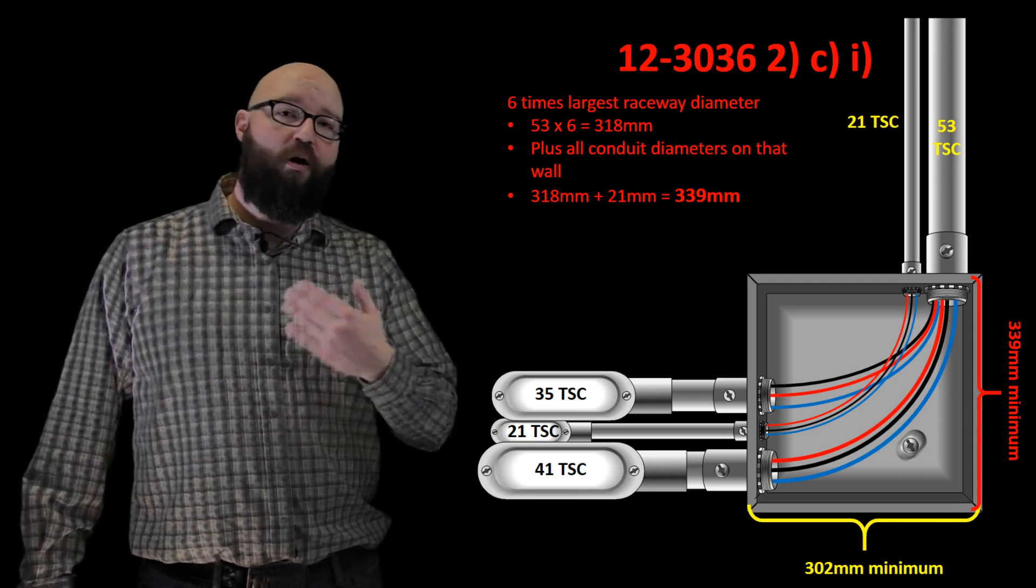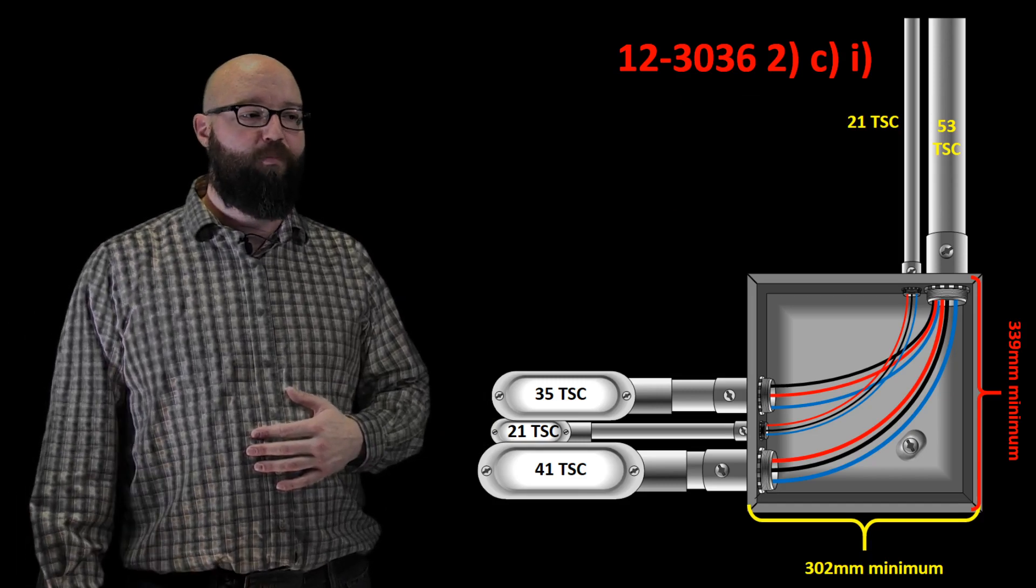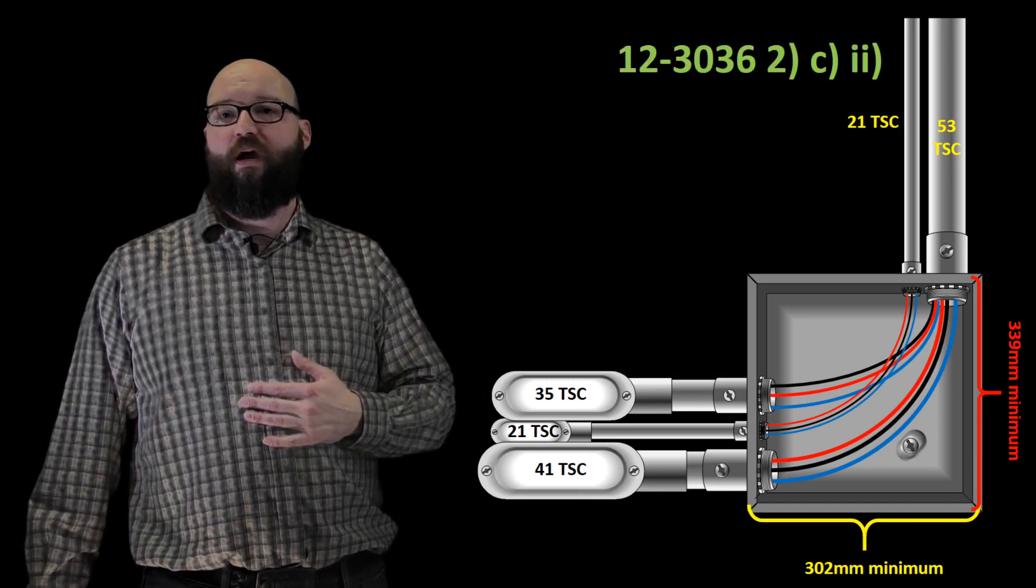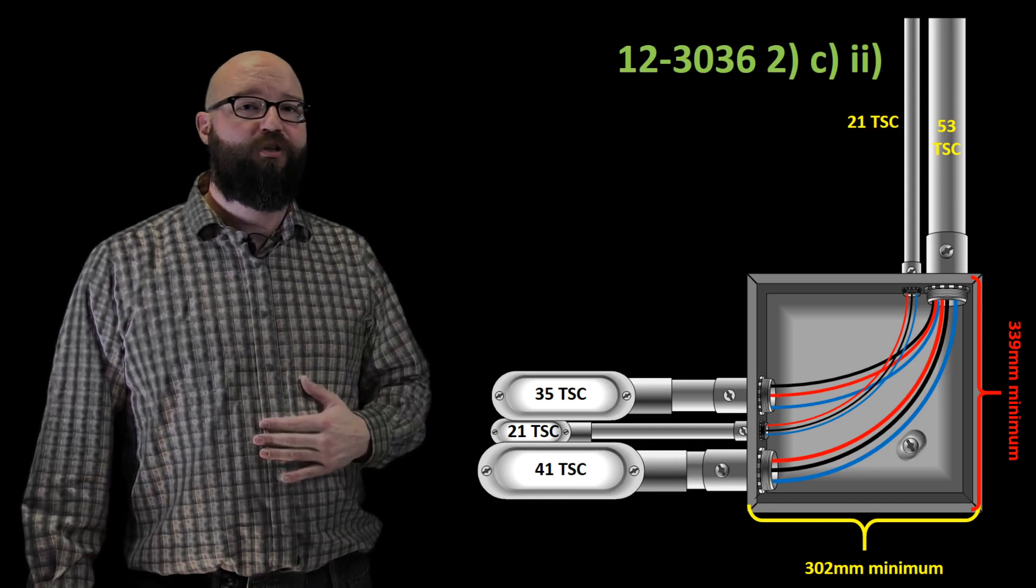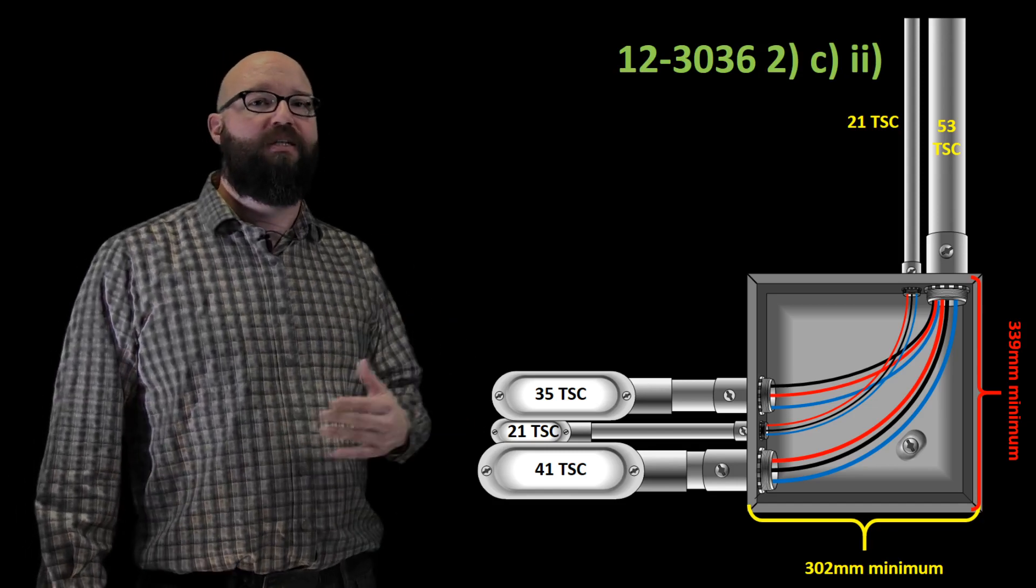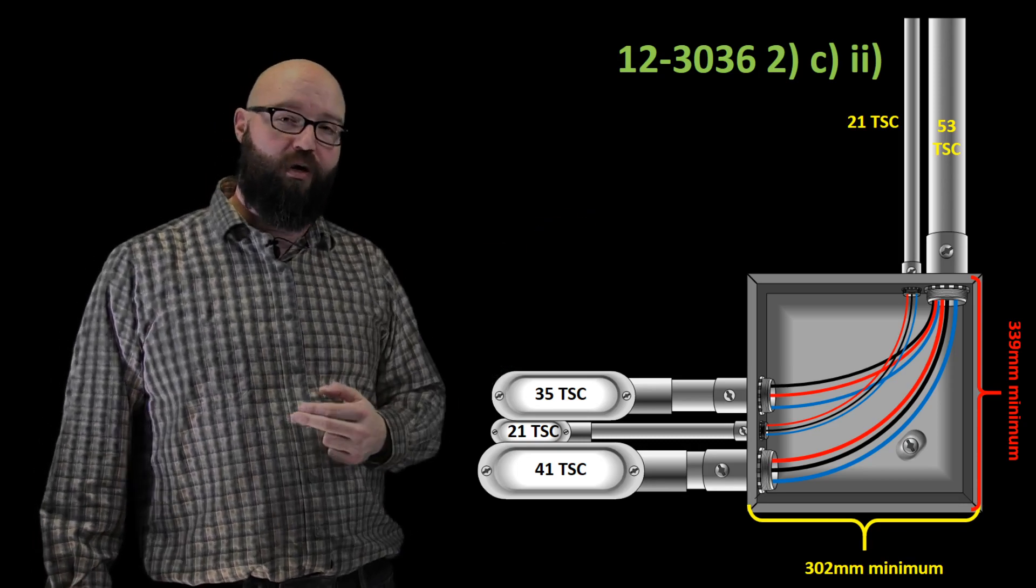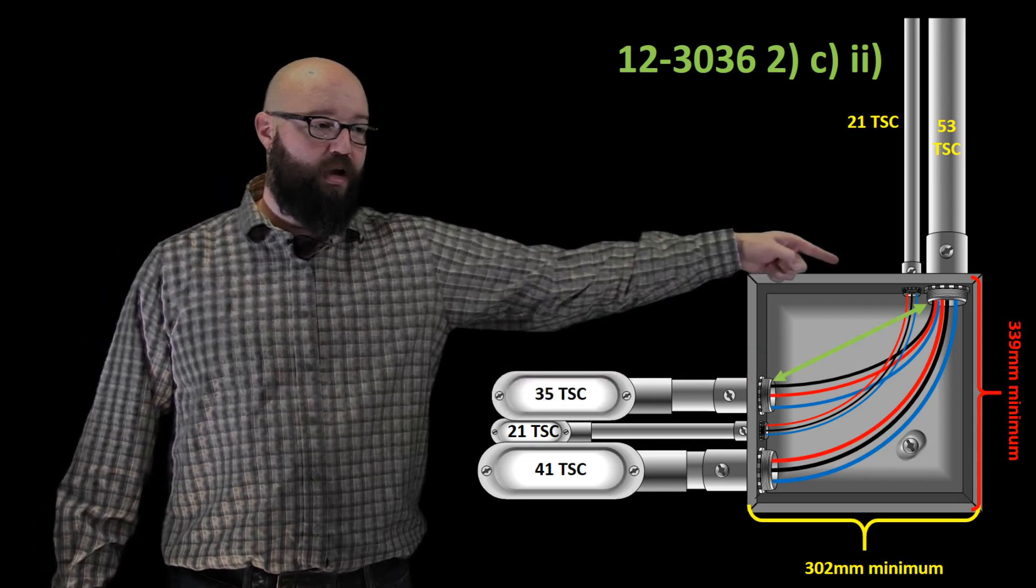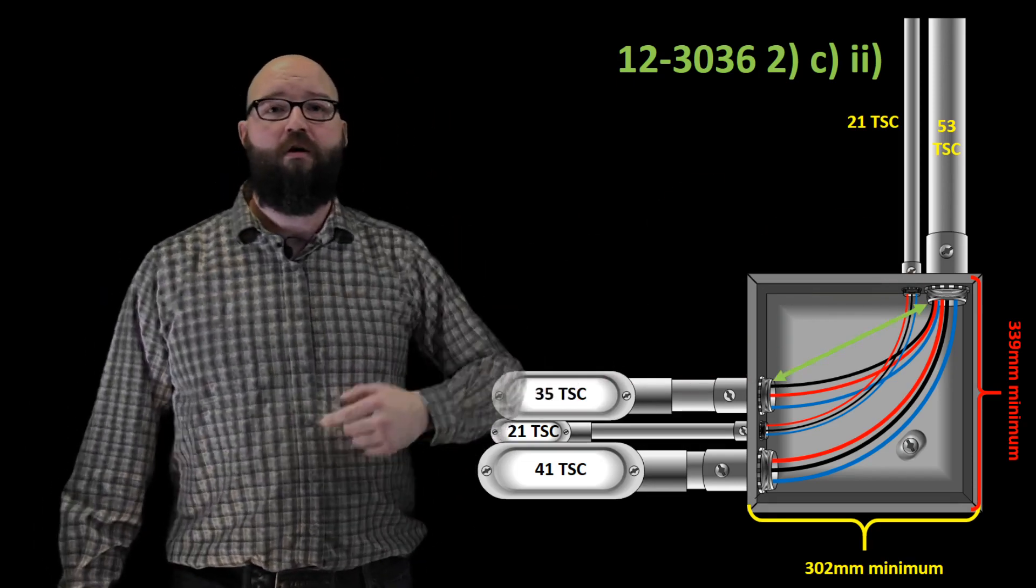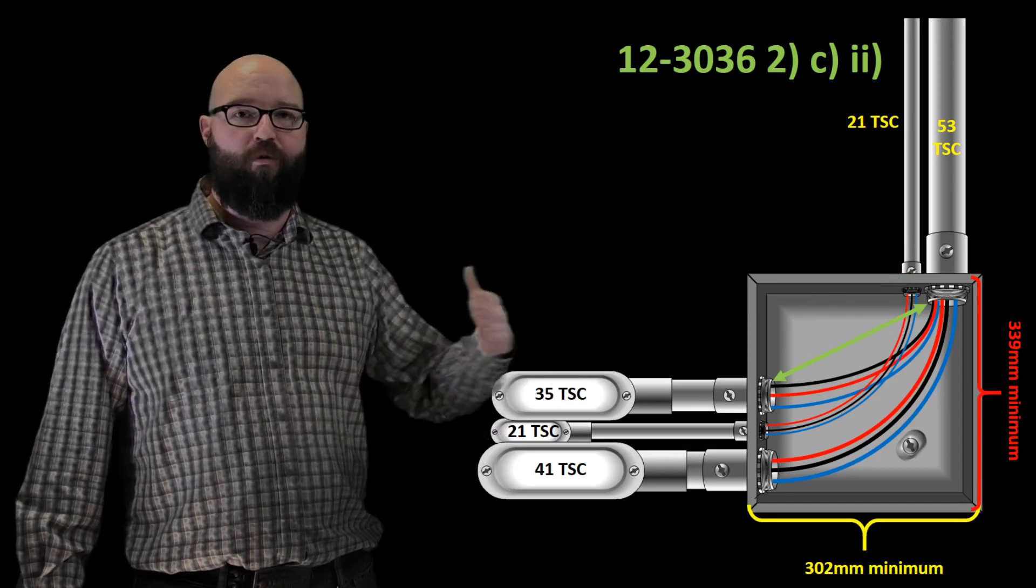So there are two other dimensions that we have to take into account when we are doing a pull box like this, especially an angle pull. We have to take into account 12-3036 sub rule 2 item C-II, which actually tells me what the minimum distance is between two conduits that contain the same conductor. So in this case, these two conduits right here, we have this one and where it enters over here, we need to figure out what the minimum distance is between those two on the innermost points.